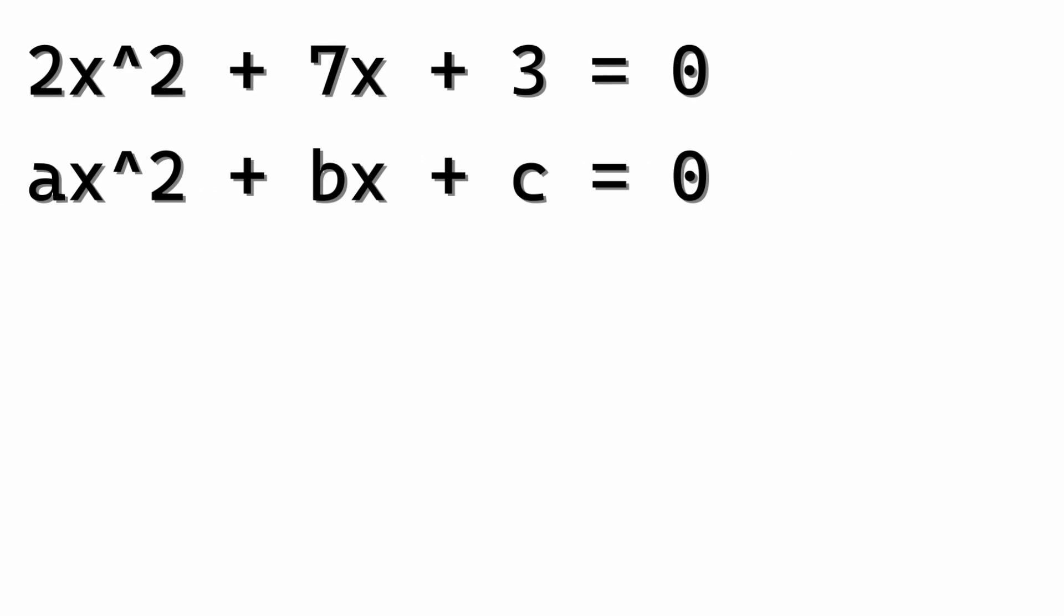So what if we had some sort of a formula to help us out? That's right, let's try to derive one. Let's replace the coefficients of x squared, x, and the extra constant term with a, b, and c. This way it'll work for every single possible quadratic equation of this form.